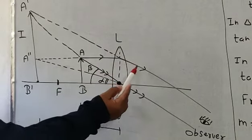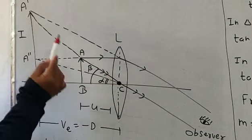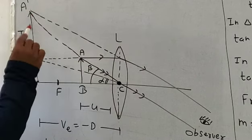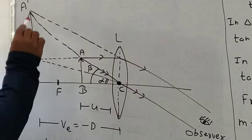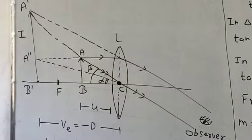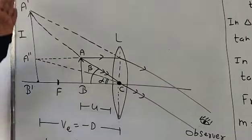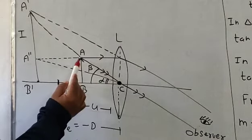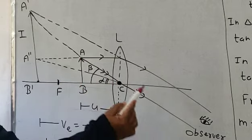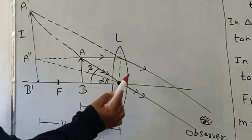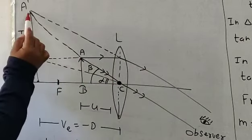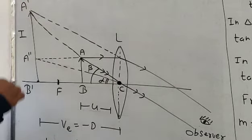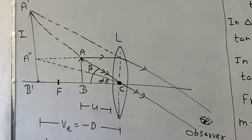When we extend both the light rays, we obtain A'B' — an erect and virtual image at the same side of the object. One ray gets refracted, another passes through the optical center; extending both rays forms A'B', which is an erect, magnified, and virtual image on the same side of the object.